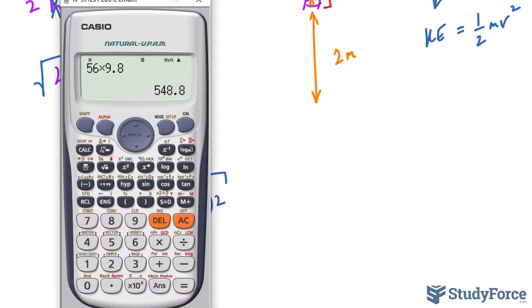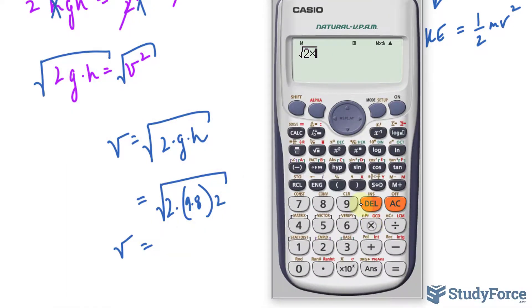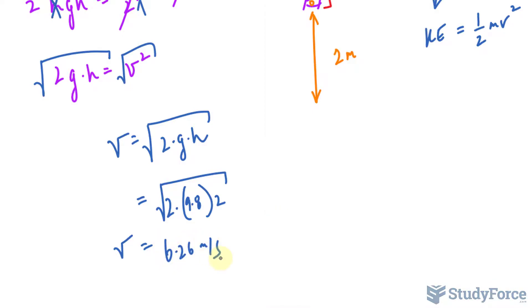So the velocity is the square root of 2 times 9.8 meters per second squared, times the height of 2 meters. Now, if we calculate this correctly, we have the square root of 2 times 9.8 times 2.